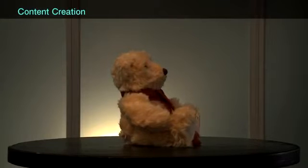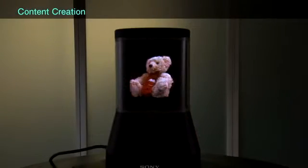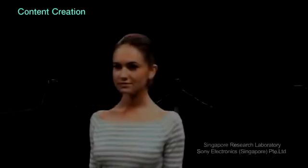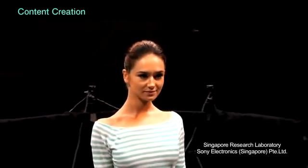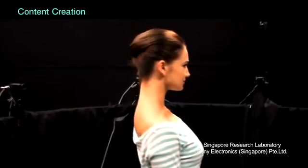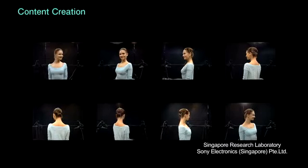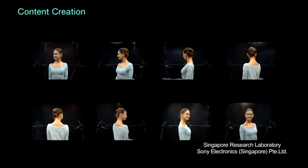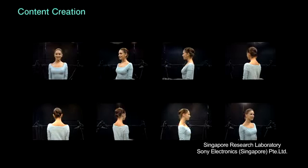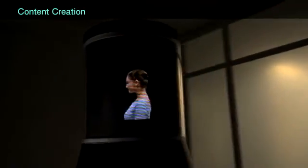A turntable is used to capture the photographed 360-degree static image. To capture 360-degree motion images, a new multiple camera system has been developed. Eight cameras are circularly aligned, and the images are captured in 45-degree separations. With view interpolation image synthesis from all eight cameras, we generate continuous 360-degree viewpoint motion images.